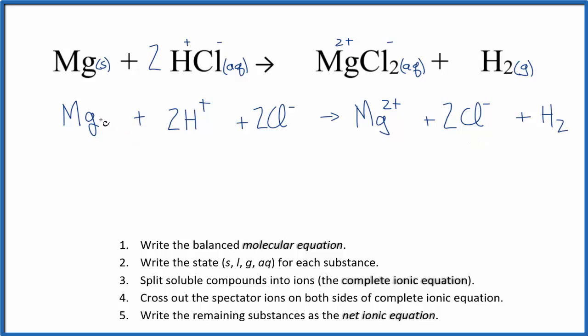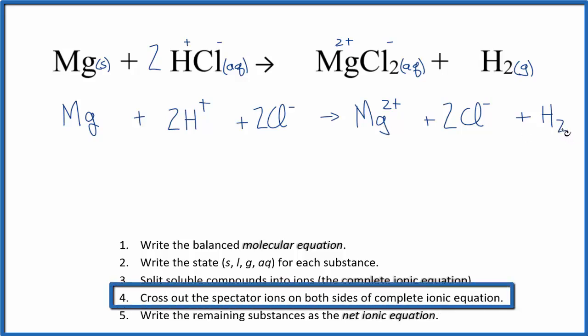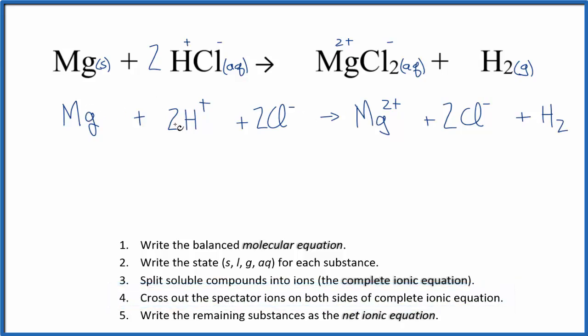If we wrote the state, it would be a solid, aqueous, aqueous, aqueous, aqueous, and then a gas. So now let's cross out the things that are the same. Mg, Mg 2 plus, those are different. 2H plus, and H2, that's different. 2Cl minus, 2Cl minus, that's the same. So these are spectator ions. We'll cross those out, and now we have the net ionic equation.